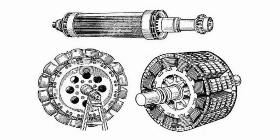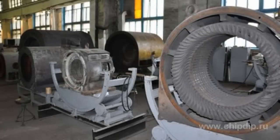The generator includes two key components: a rotor and a stator. Each of these components has numerous systems and parts. A rotor is a rotating component that is exposed to dynamic, mechanical, electromagnetic, and thermal loads.